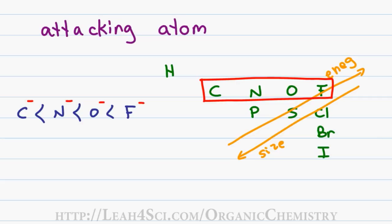And since the trend for electronegativity is carbon less than nitrogen, less than oxygen, less than fluorine, a negative carbon will be the strongest base or nucleophile when compared to a nitrogen which is stronger than oxygen which is stronger than fluorine.